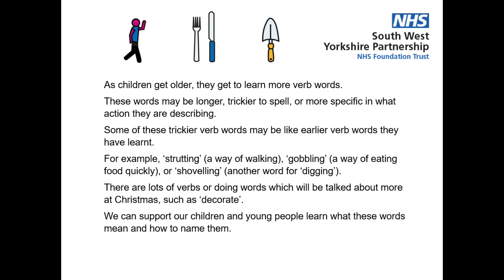As children get older, they get to learn more verb words. These words may be longer, trickier to spell, or more specific in what action they are describing. Some of these trickier verb words may be like earlier verb words they have learned. For example, strutting, gobbling, or shoveling.